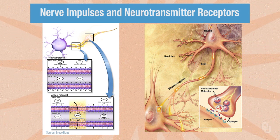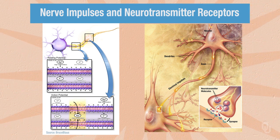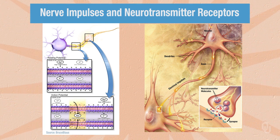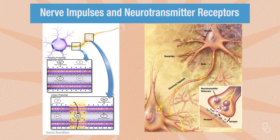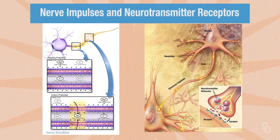Looking at the lower right-hand corner of the diagram on the right, we see the terminal portion of the axon. When the wave of depolarization reaches the end of the axon, this triggers the movement of vesicles that contain neurotransmitter molecules, triggering their movement to the membrane itself, fusion with the membrane, and release of their cargo neurotransmitters. These neurotransmitter molecules diffuse across the synapse, or synaptic cleft, and they bind to receptors and elicit a response.